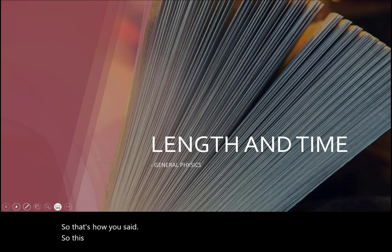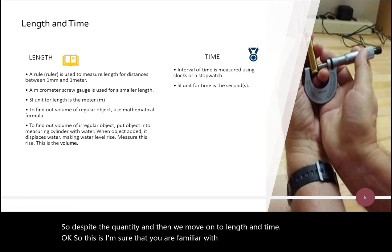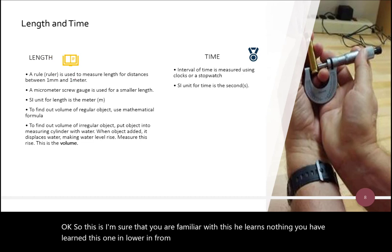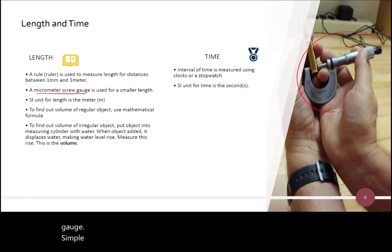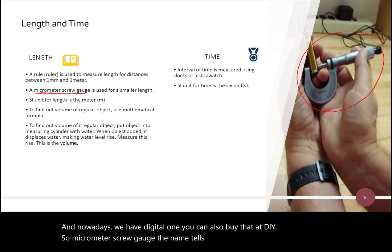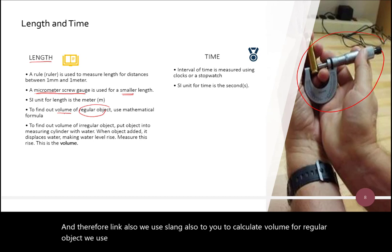Okay, then we move on to length and time. Okay, so this, I'm sure that you are familiar with this. Okay, length, nothing new. We have learned this one in form 1. We use a ruler to measure length for distances between 1mm and 1m. And then we have a micrometer screw gauge. So, this is example of micrometer screw gauge. And now we have digital one. You can also buy that. Okay, so micrometer screw gauge, the name tells you the function. It measures distance or length of smaller, the smaller length. Okay. And the SI unit is meter. And then for length also, we use length also to calculate volume. For regular object, we use mathematical formula.